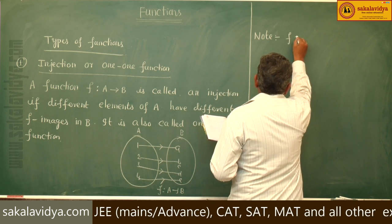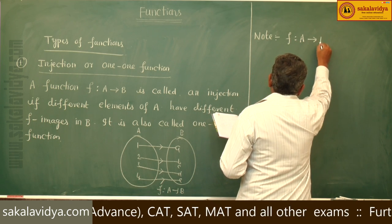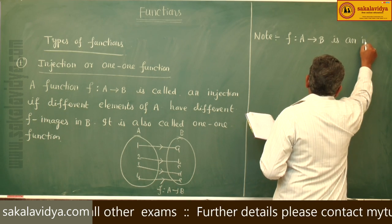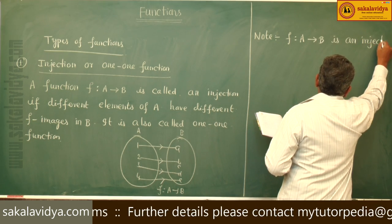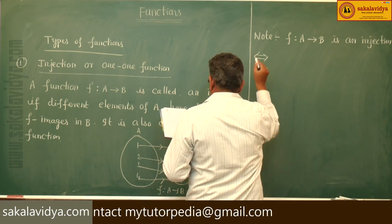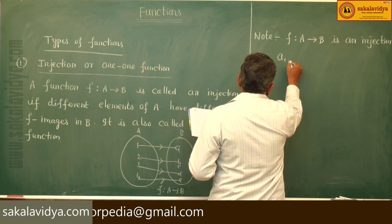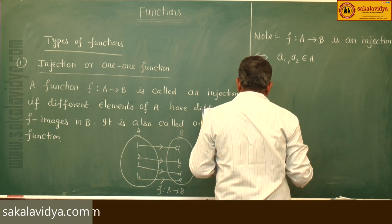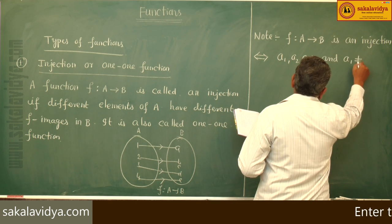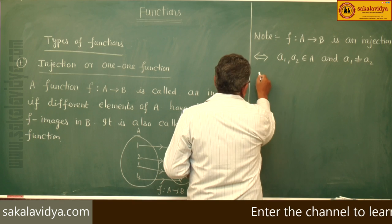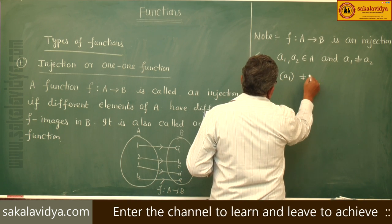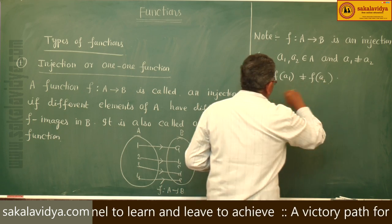F maps A to B is an injection, meaning one-to-one only, if and only if a1, a2 belong to A and a1 does not equal a2, that implies f(a1) does not equal f(a2). Their images are also different.